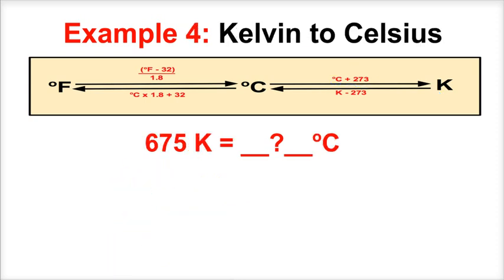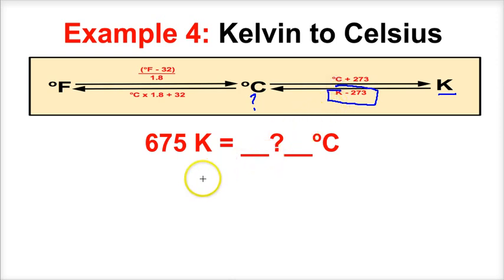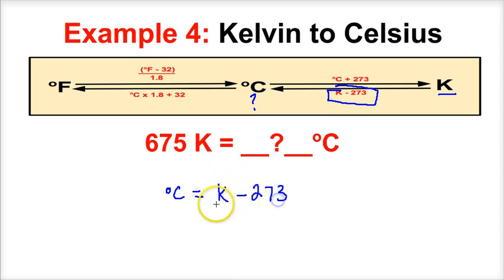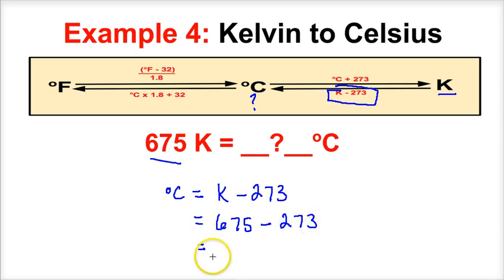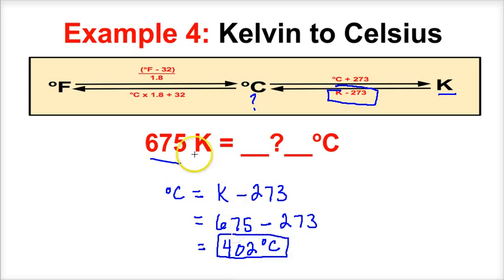In this example, we've got 675 K and we want to know the degrees Celsius. We know the Kelvin temperature, and we want to find the degrees Celsius temperature. Going from Kelvin to Celsius, we take the Kelvin temperature minus 273: 675 minus 273. We put this in our calculator and end up with 402 degrees Celsius. So 675 K is the same temperature as 402 degrees Celsius.